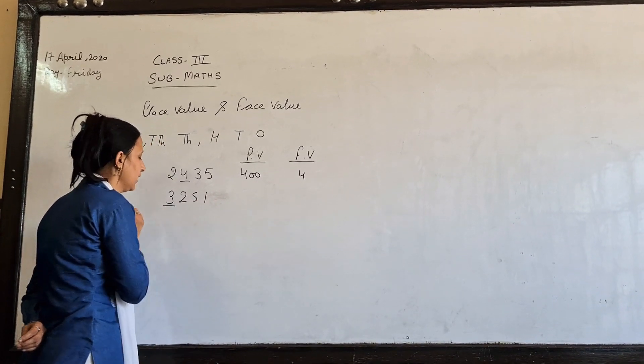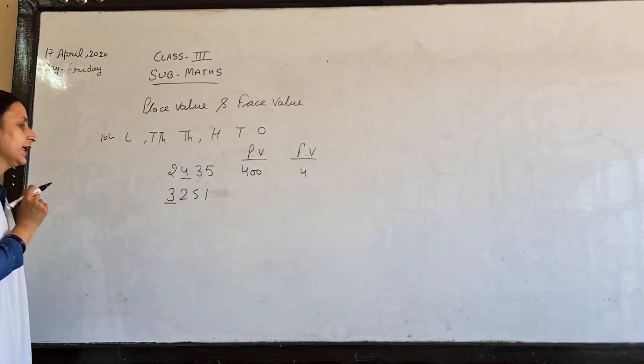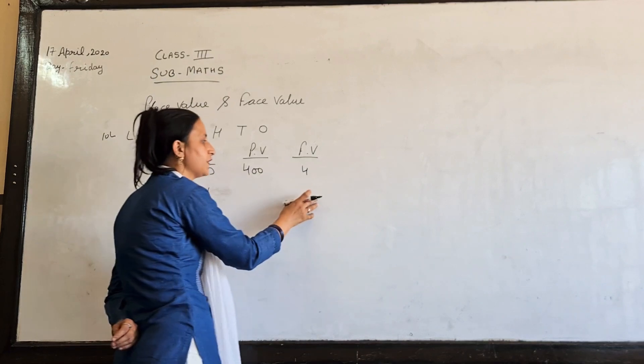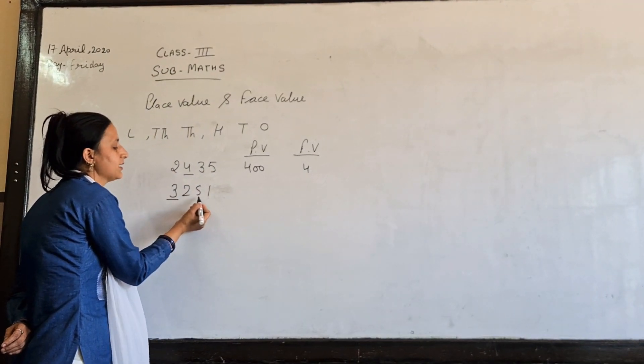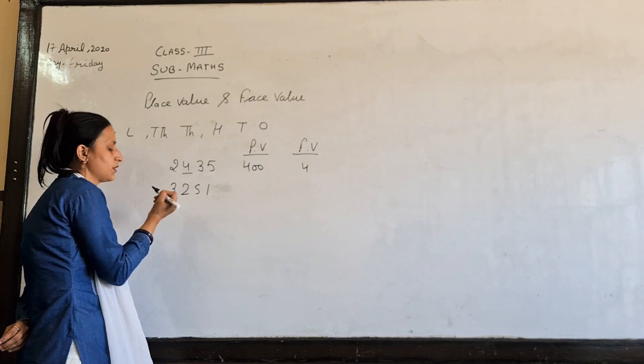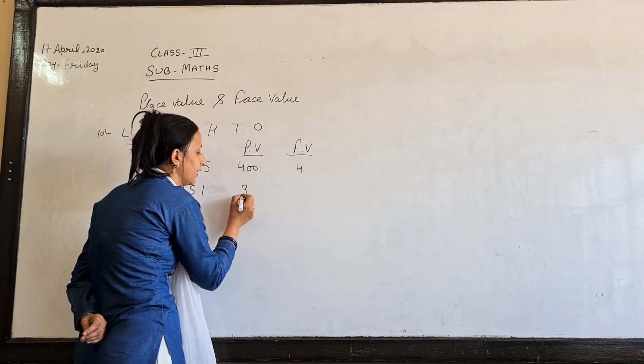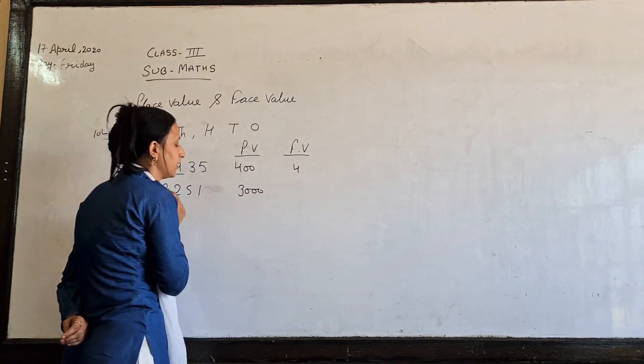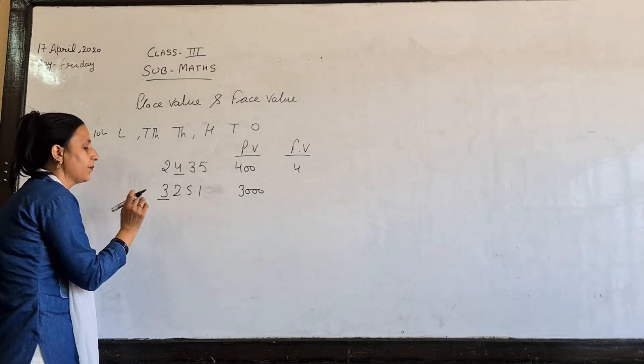Now I have 3 to analyze it. So 3's place value is 1,000. So 3's place value is 3,000. This is the simple thing I have already told you.